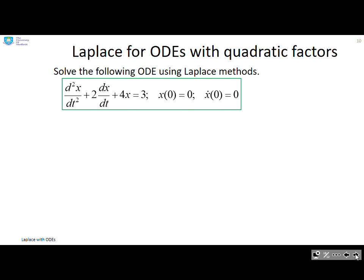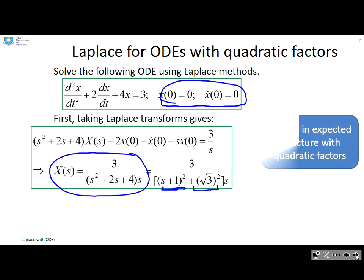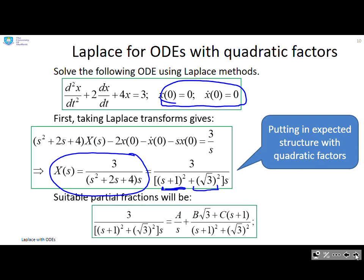What happens if you have quadratic factors? Here we're asking you to solve this ODE. I've made the initial condition 0 to make life a little bit simpler. So again, the first thing: take Laplace transforms of every term in the equation and then separate out the x(s). And you'll see this is what you get: x(s) = 3/(s²+2s+4)·s. You'll remember from the video on inverse Laplace that what you want to do is look at this quadratic factor. I can see I've got (s+1)² + (√3)².